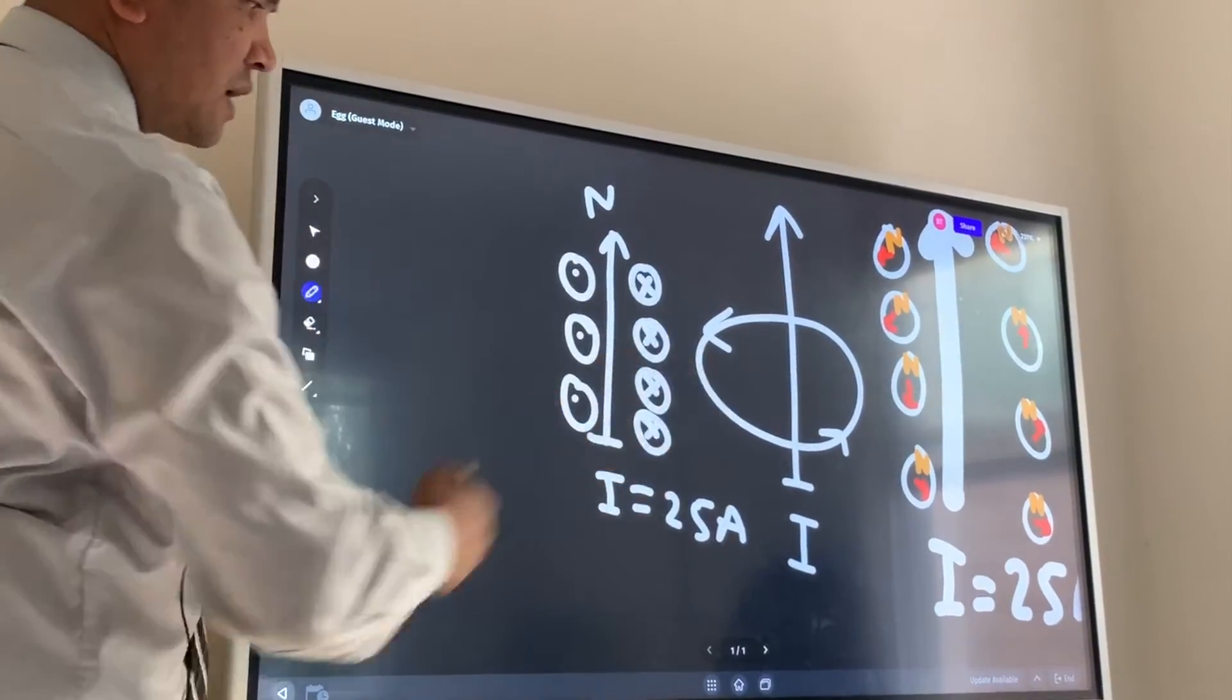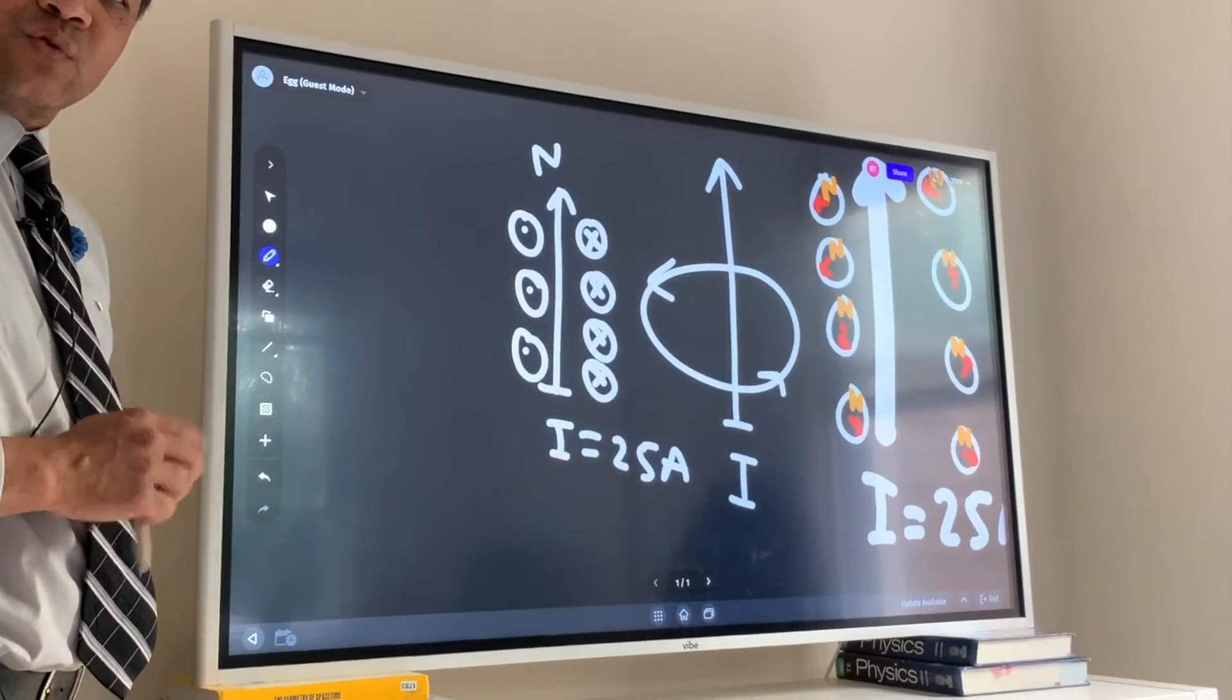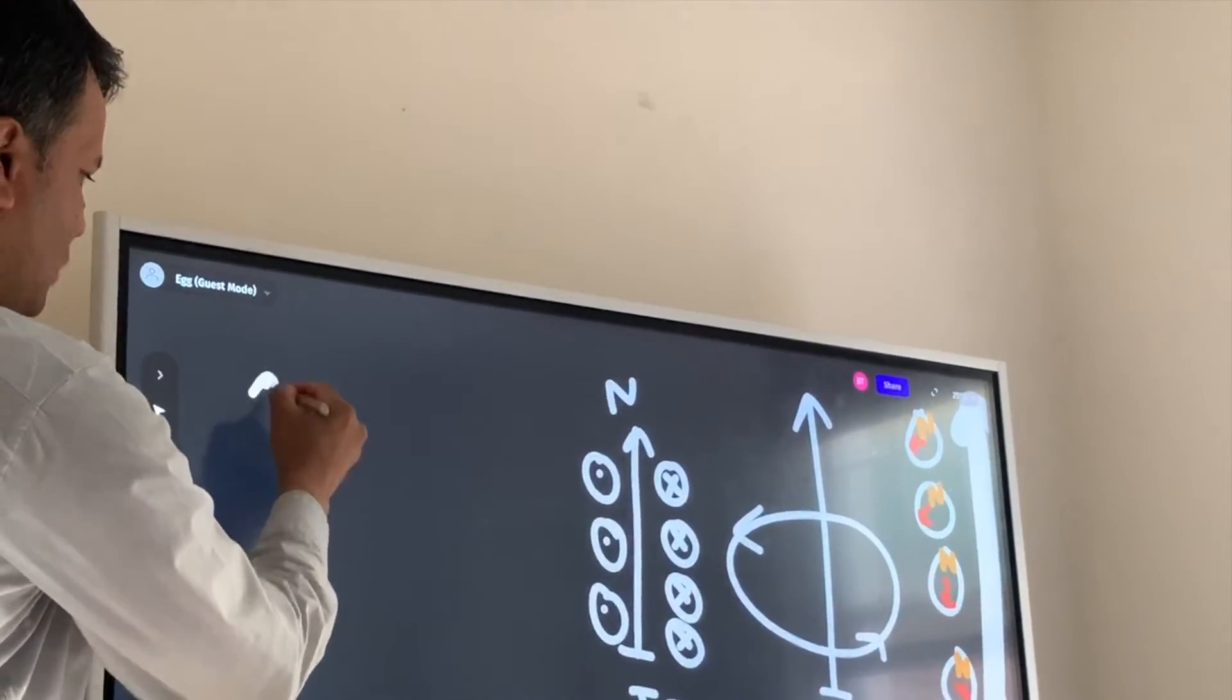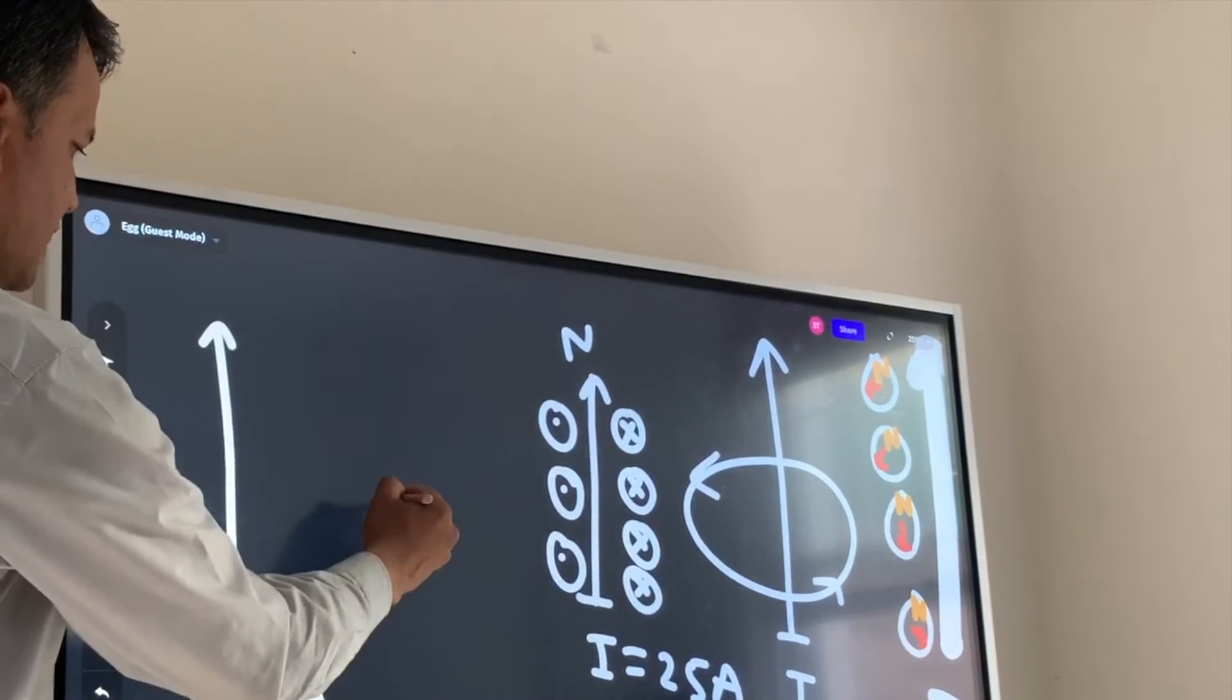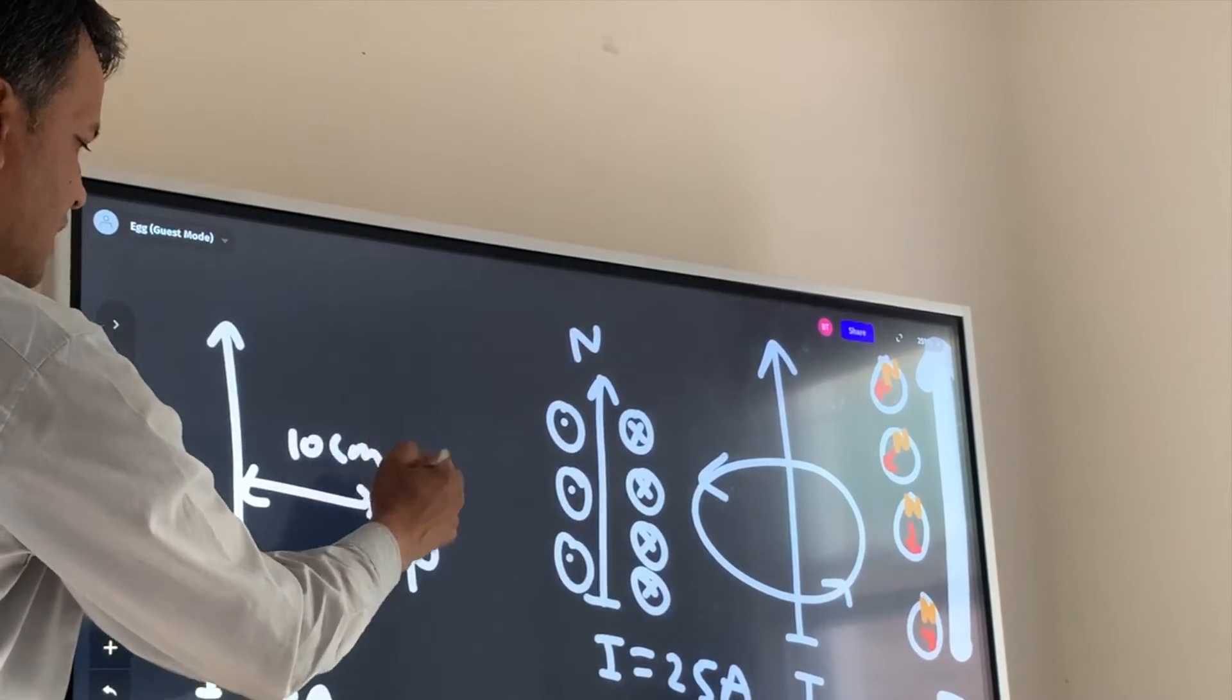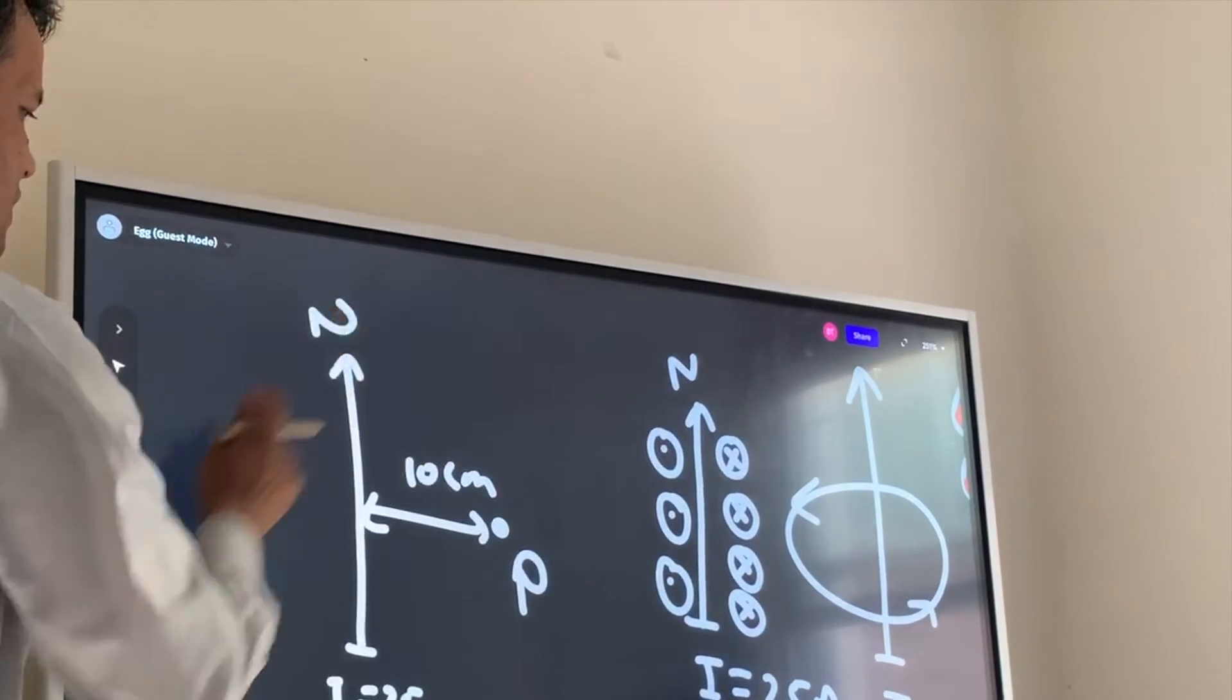If there is a current on the wire which is 25 amps, we want to find the magnetic field right here, which is 10 centimeters away from the point P. And of course, the current moves to the north.